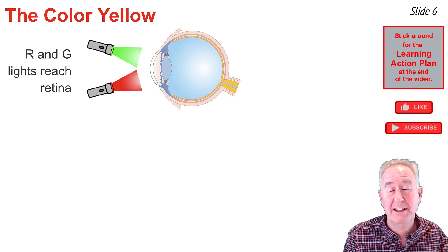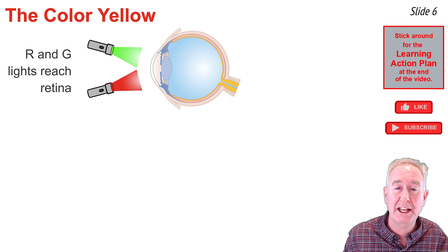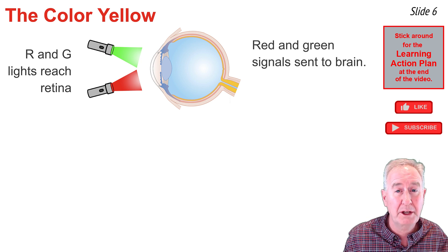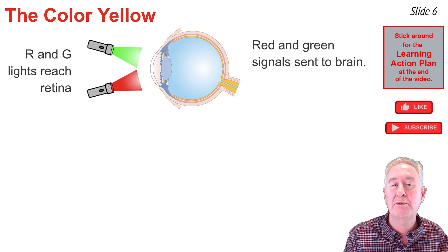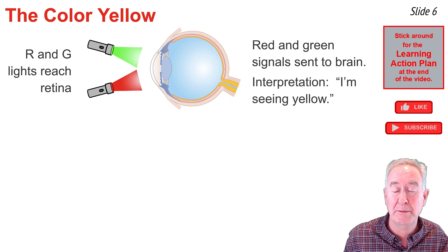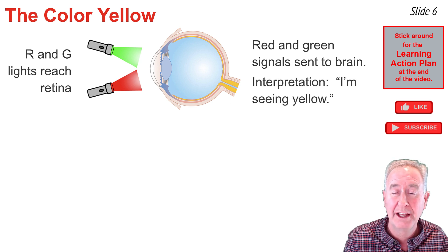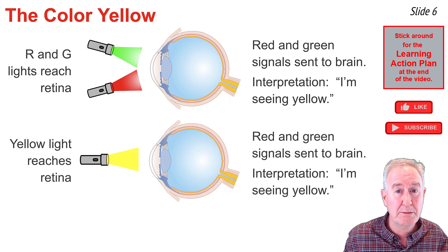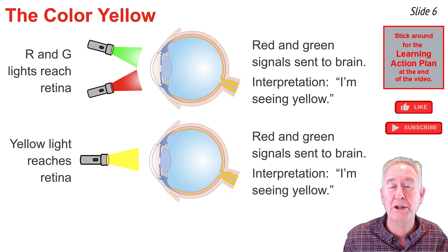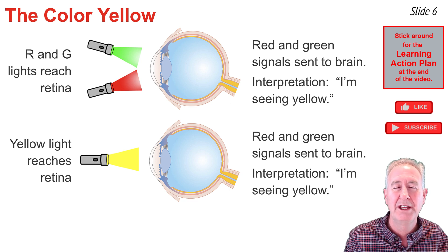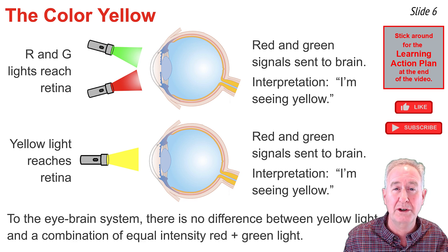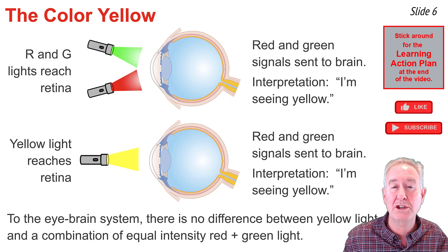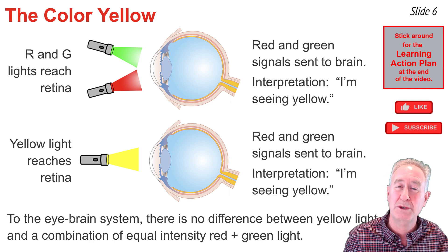The color yellow can be quite interesting. If red and green light are shining on the retina, the red cone and the green cone would be sensitive to those wavelengths and would send signals to the brain, which would interpret it to mean: I'm actually looking at something that's yellow. Now if yellow wavelengths of light are shining on the retina, the red and the green cone would respond to that yellow wavelength and send signals to the brain interpreted to mean: I'm looking at something yellow. So as far as the eye-brain system is concerned, there's absolutely no difference between yellow wavelengths of light striking the retina, and a combination of equal intensity red and green light striking the retina.